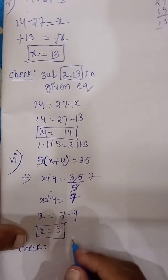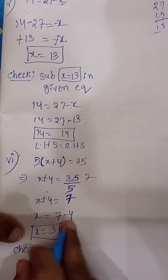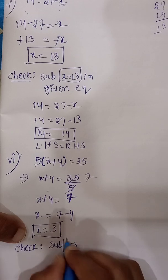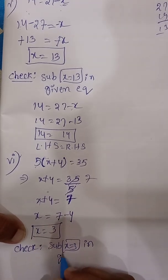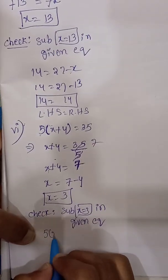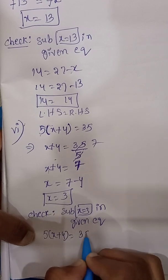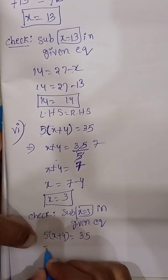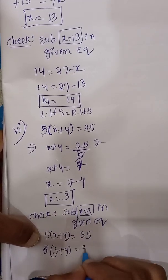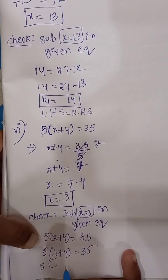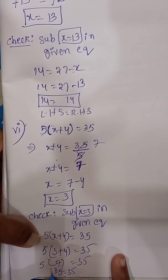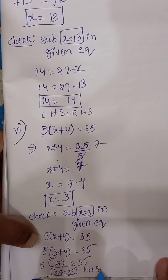Check: substitute X equal to 3 in the given equation 5 into X plus 4 equal to 35. We get 5 into 3 plus 4, which is 5 into 7, equal to 35. LHS equals RHS, so our answer is correct.